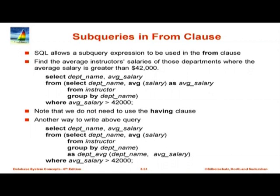The next construct is subqueries in the FROM clause. Here we have SELECT department_name, avg_salary FROM instructor GROUP BY department_name — the same query we saw before — but now it is stuck as a subquery inside a FROM clause, with an extra condition in the outer WHERE clause: avg_salary > 42000. This is exactly the same query we wrote with the HAVING clause. Instead of HAVING, we put the first part as a subquery inside the FROM clause, and the outer WHERE clause contains whatever was the HAVING condition.